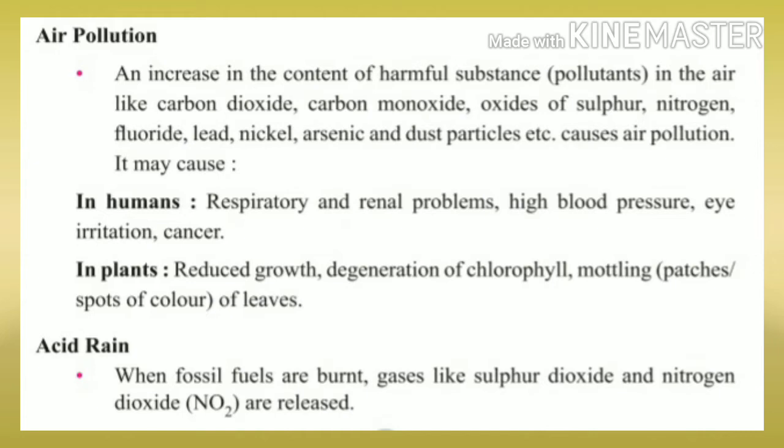In plants, air pollution causes reduced growth, degeneration of chlorophyll — meaning chlorophyll decreases — and mottling, which means patches or spots of different colors appear on leaves. This is how air pollution affects plants as well.